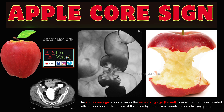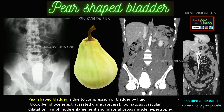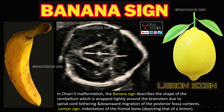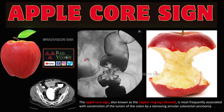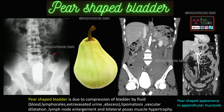This is the pear-shaped bladder, classically seen in any condition where the bladder is completely compressed and takes the shape of a pear. Pear-shaped bladder can be due to compression by fluid, blood, lymphocytes, or extravasated urine. It can also be caused by excessive pelvic lipomatosis, vascular dilatation, lymph nodal enlargement, or bilateral psoas enlargement — as seen in this case, where bilateral psoas enlargement is compressing the bladder.